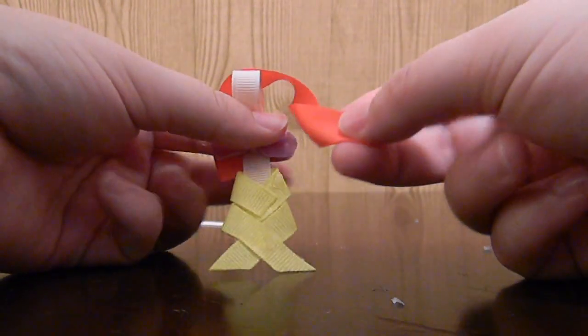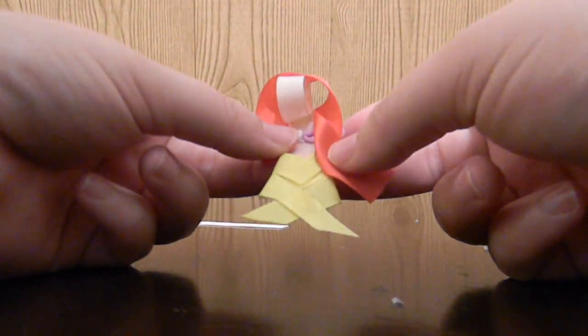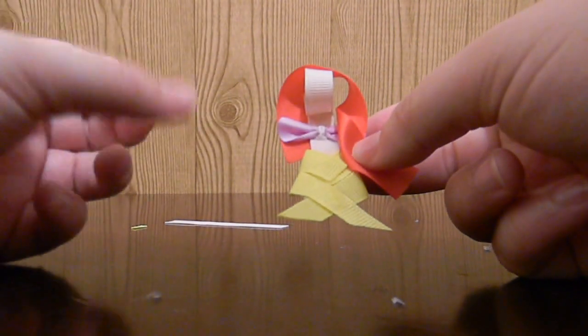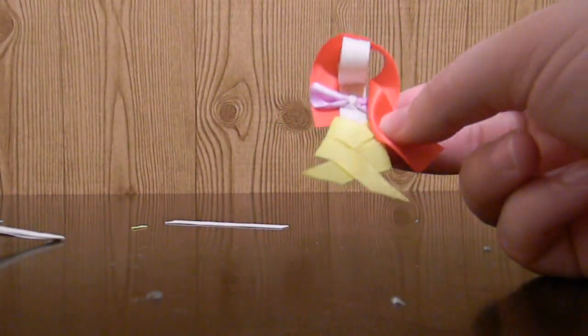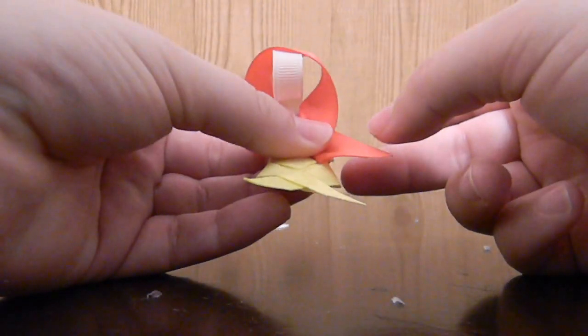You can do the hair any way you want. I've taken smaller ribbon and I have cut slits in it. Then you just take your lighter and you heat it and it curls up. So if you want to use smaller ribbon you can.